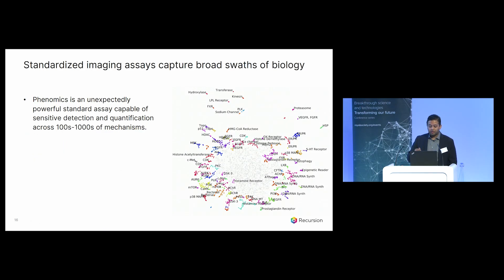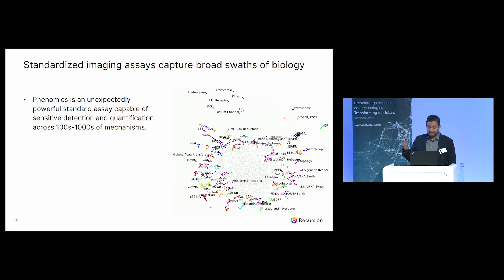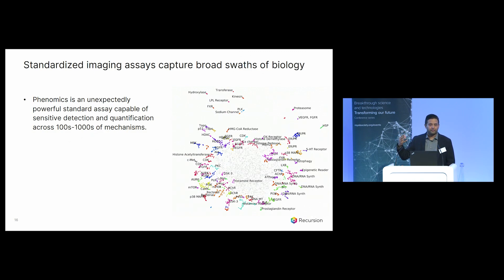These assays capture super broad swaths of biology. It may not be obvious that by staining six common cellular substructures you can pull out a ton of information, but this is an unexpectedly powerful standard assay. We can sensitively detect and quantify in dose response across hundreds or even thousands of mechanisms. We were able to show that our assay could sensitively cluster many different kinds of biology — even things that on the surface look like they have the same anti-cancer, anti-proliferative effects — into their unique mechanisms of action.